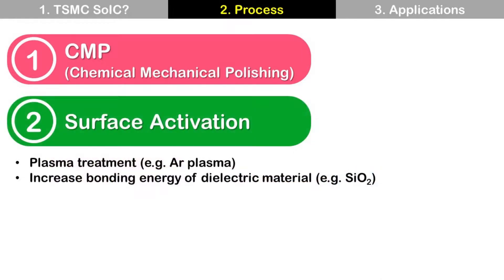Step 2: Surface Activation. This process uses plasma — for example, argon plasma — to increase the bonding energy of the dielectric material, for example, silicon dioxide.